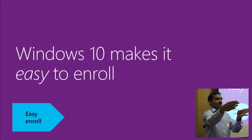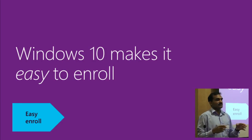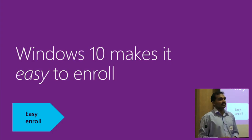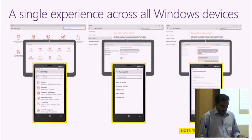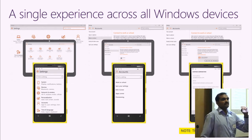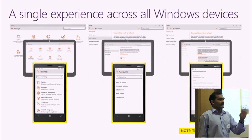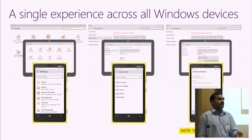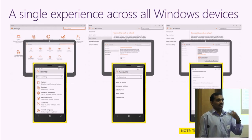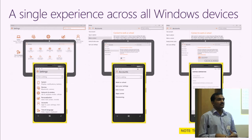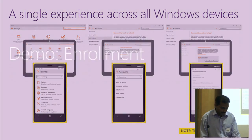The first process in the MDM lifecycle is enrollment. When you take a device, you enroll it at an early stage. On previous Windows versions like 8 and 8.1, there was a separate Company Portal app you'd download to join the office network. But in Windows 10 it's become much easier — I'll show you the demo now using an emulator so I don't have to switch between devices.